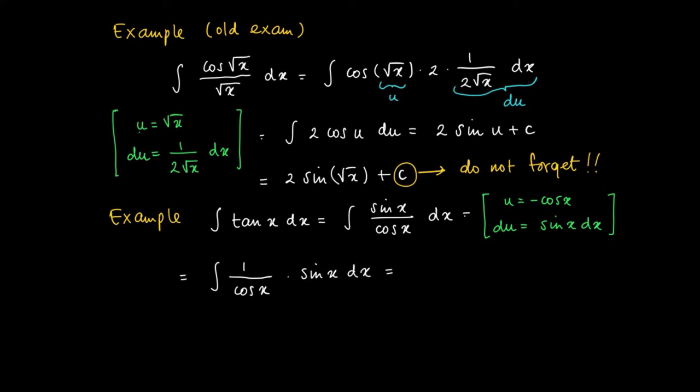So we get the integral of minus 1 over u du, which has as primitive minus the natural logarithm of the absolute value of u.